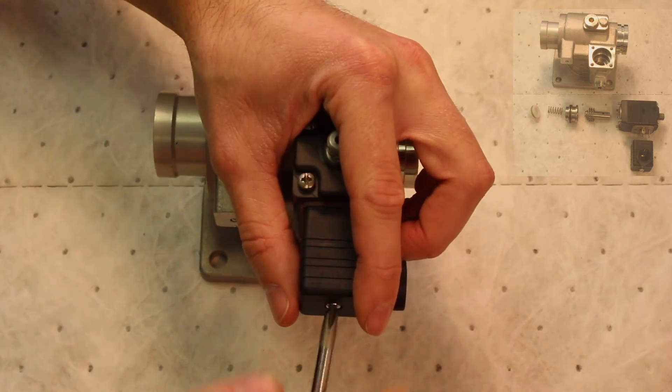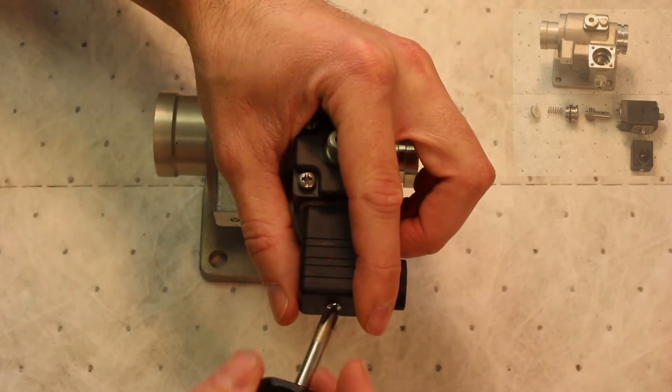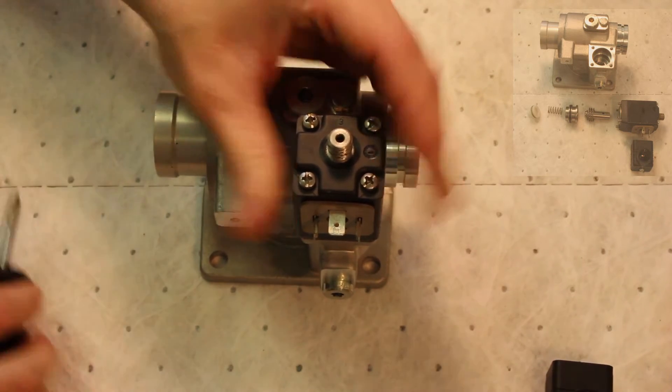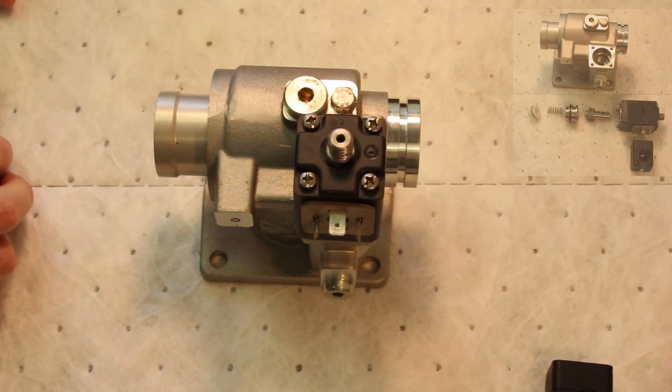Start by removing the solenoid cord cap from the solenoid valve. The screw holding the cord cap on is located on the back of the cord cap. If the cap is stuck on the valve, gently rock the cap back and forth to work it free.